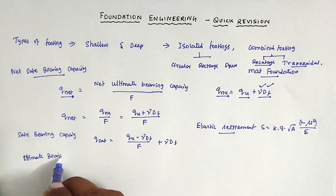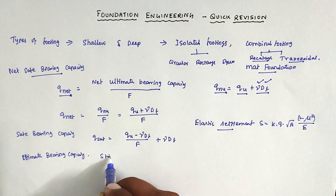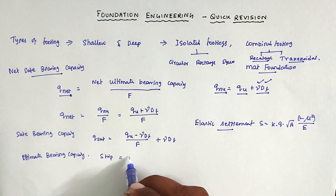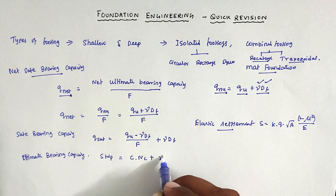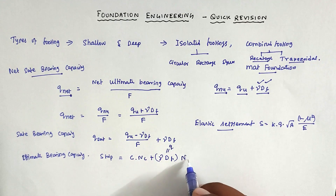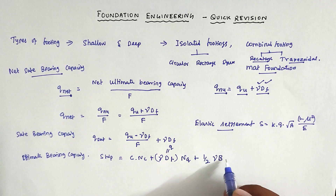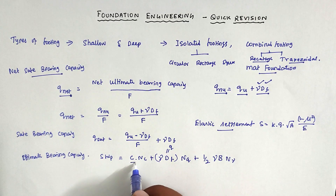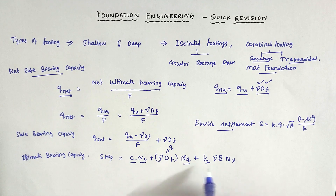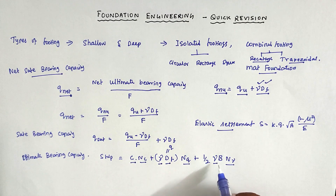Ultimate bearing capacity — for strip footing, the formula is: Q_U = C·N_C + gamma·D_F·N_Q + 0.5·gamma·B·N_gamma. Here, C is cohesion, N_C, N_Q, and N_gamma are Terzaghi bearing capacity factors, gamma is the unit weight of soil, D_F is depth of foundation, and B is the width of footing.